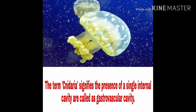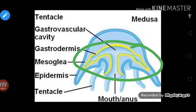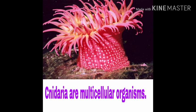First point: the term Cnidaria signifies the presence of a single internal cavity called the gastrovascular cavity. Inside this single internal cavity, there is the gastrovascular cavity, which is the primary organ for digestion of prey.